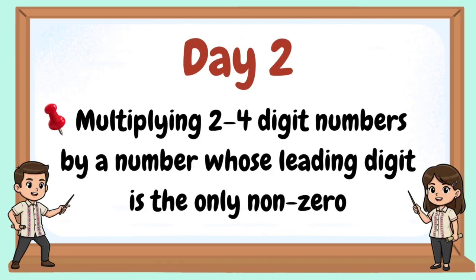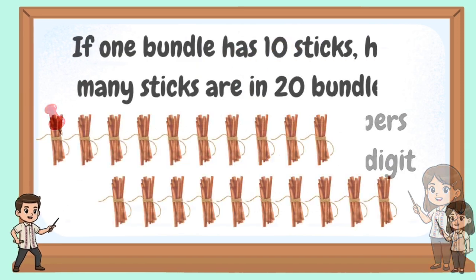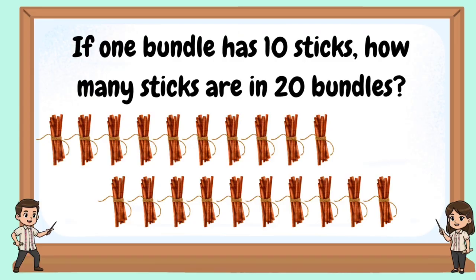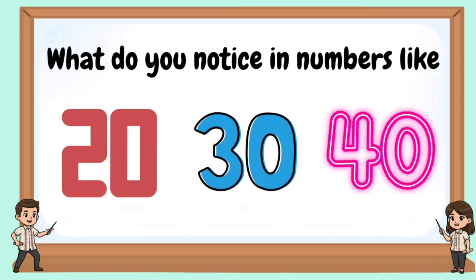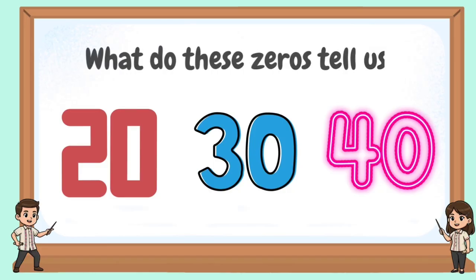Welcome to our day 2: Multiplying 2 to 4-digit numbers by a number whose leading digit is the only non-zero. If one bundle has 10 sticks, how many sticks are in 20 bundles? What do you notice in numbers like 20, 30, 40?